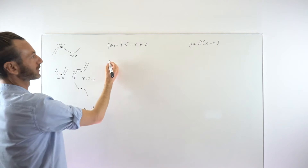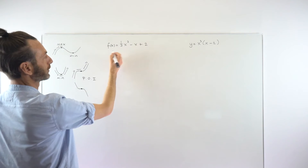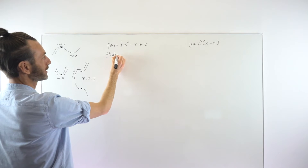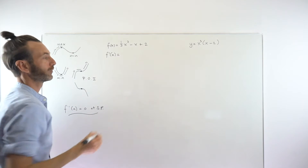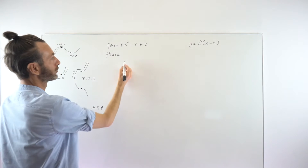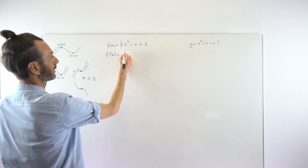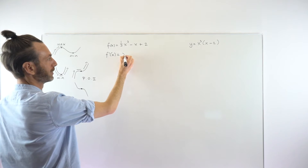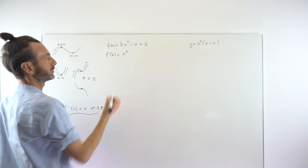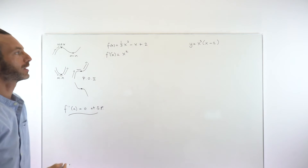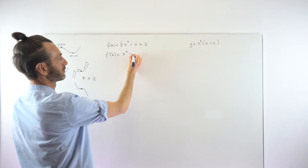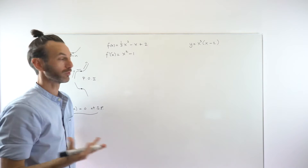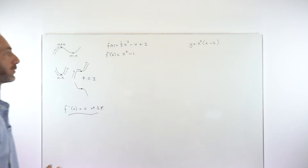Let's look at our first example — a cubic function. We'll take the first derivative. It's in a differentiable form so we can use the power rule. Three times one-third is one, so it's x squared. The derivative of minus x is minus one, and the derivative of the constant two goes to zero. So our first derivative is x squared minus one.